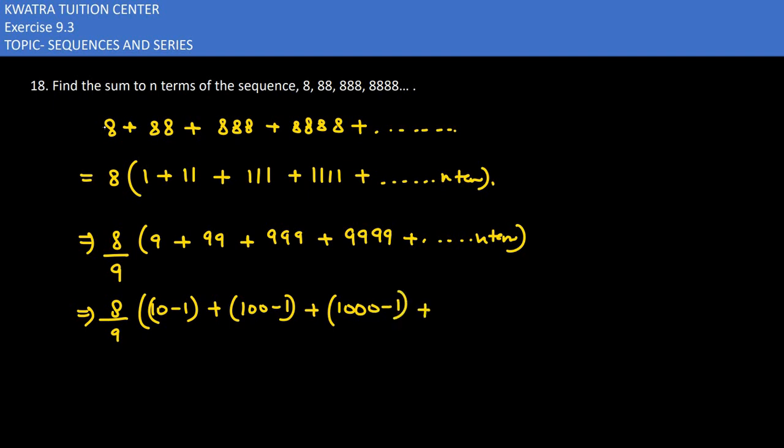We have 10 minus 1, then how can we write 100? 10 squared. How can we write 1000? 10 cubed. How can we write 10000? 10 to the power 4.